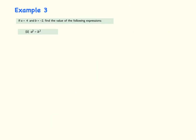Example 3, we're asked to find a squared minus b squared. Again, if a is equal to 4 and b is equal to minus 2. So it is a squared minus b squared, and a is equal to 4 and b is equal to minus 2. I'm going to write them up here on the side.